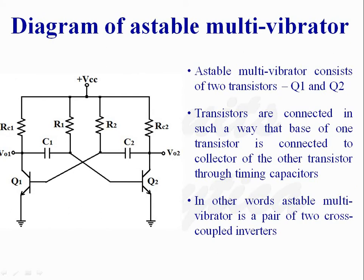This is the diagram of an astable multivibrator. An astable multivibrator consists of two transistors Q1 and Q2. These transistors are connected in such a way that the base of one transistor is connected to the collector of the other transistor through timing capacitors C1 and C2. In other words, an astable multivibrator is a pair of two cross-coupled inverters.